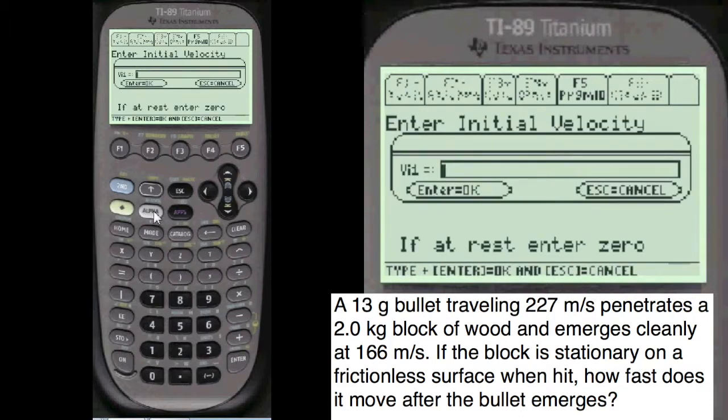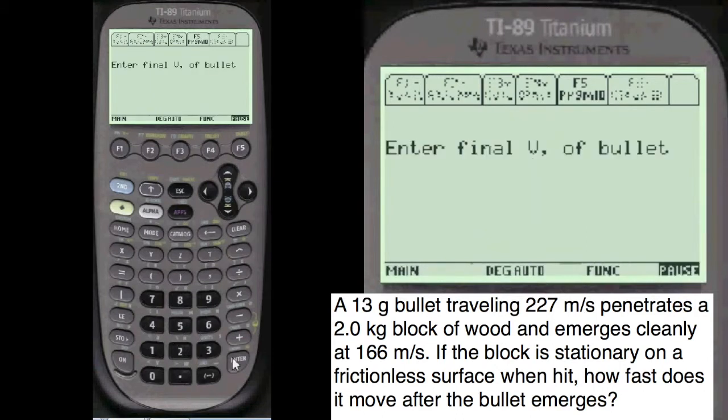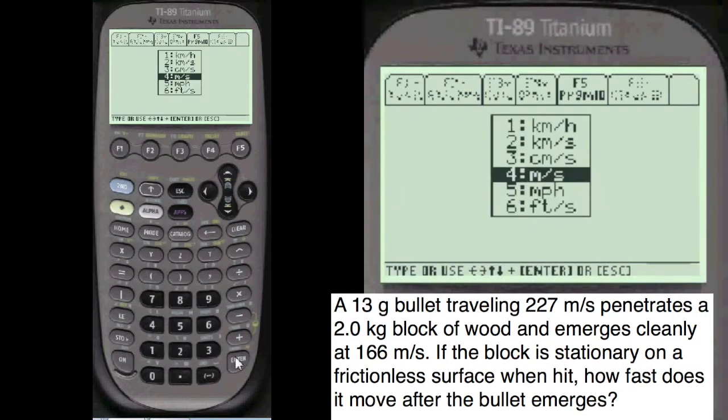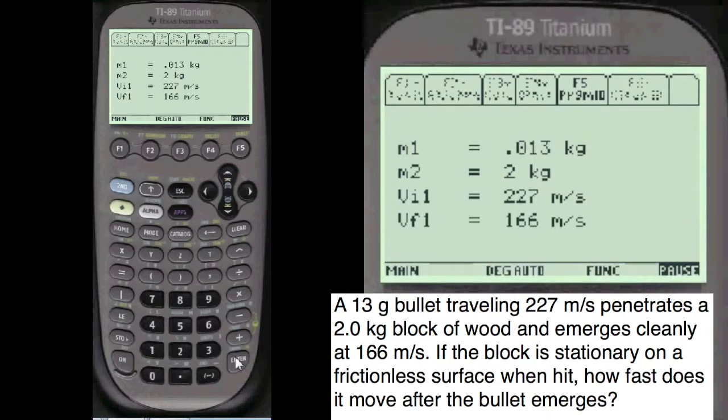Initial velocity of the bullet is alpha 227 meters per second. And the final velocity is alpha 166 meters per second. Positive direction. I always show you what you've entered. You can change it if you want, if you made a mistake. It looks pretty good to me.